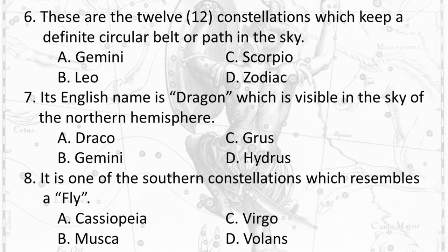Question 7: Its English name is 'Dragon,' which is visible in the sky of the northern hemisphere. A. Draco B. Gemini C. Grus D. Hydrus.